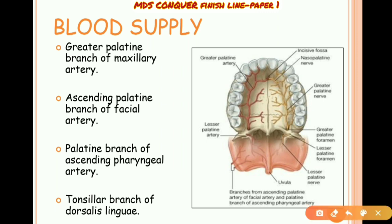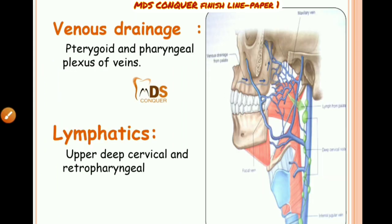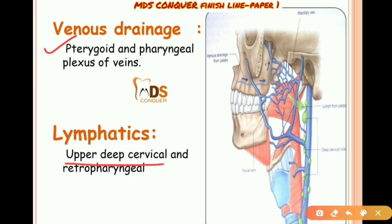Blood supply: greater palatine branch of the maxillary artery, ascending palatine branch of the facial artery, palatine branch of the ascending pharyngeal artery, and tonsillar branch of the dorsalis linguae. Venous drainage is via the pterygoid and pharyngeal plexuses. Lymphatics drain to the upper deep cervical and retropharyngeal lymph nodes.